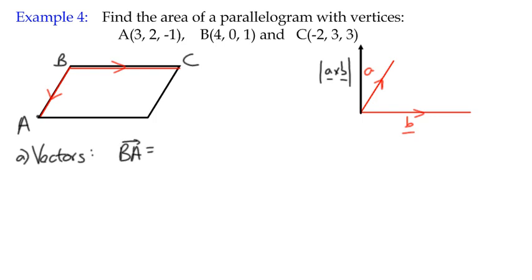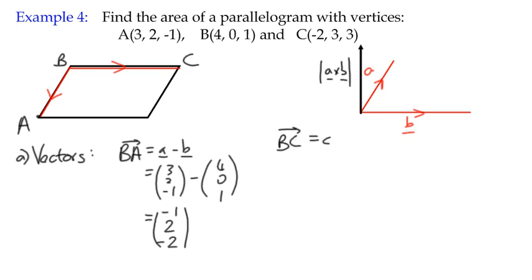BA is position vector A minus position vector B. That works out as (3, 2, -1) subtract (4, 0, 1), which gives me (-1, 2, -2). My second vector, BC, can be calculated in the same way.